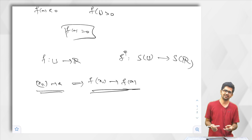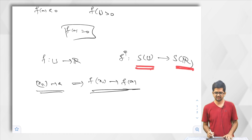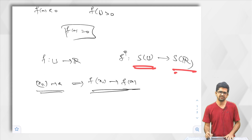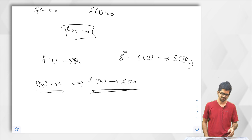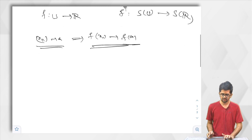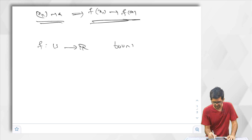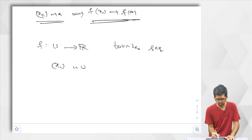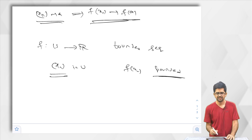There are three things remaining for us to discuss: one is a function that maps bounded sequences to bounded sequences; next, a function that maps Cauchy sequences to Cauchy sequences; and a function that maps monotone sequences to monotone sequences. So three things are remaining. Let us do one by one. Let us think about functions that preserve bounded sequences.